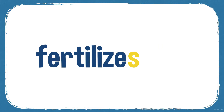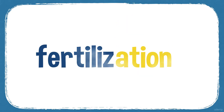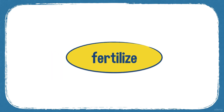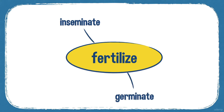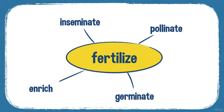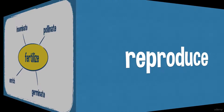Fertilise is a verb — fertilises, fertilising, fertilised. Fertilisation is the process noun. Synonyms: inseminate; germinate, especially with plants; pollinate with plants; and enrich — for example, with the chemical spray on a farm they were enriching the soil.